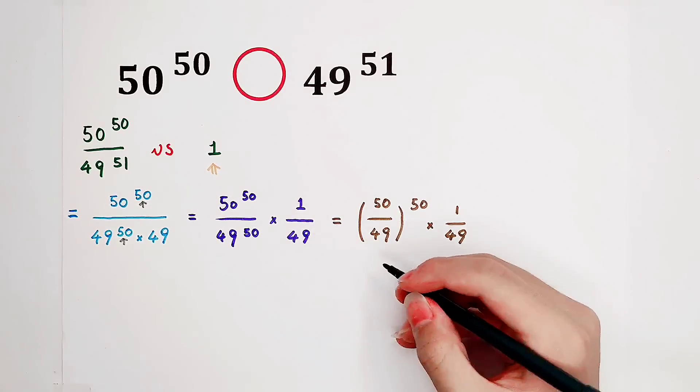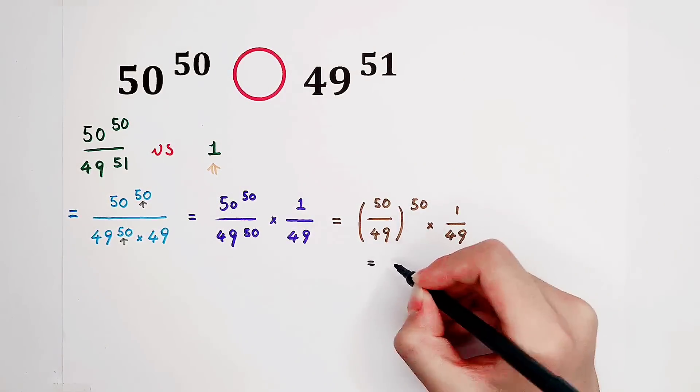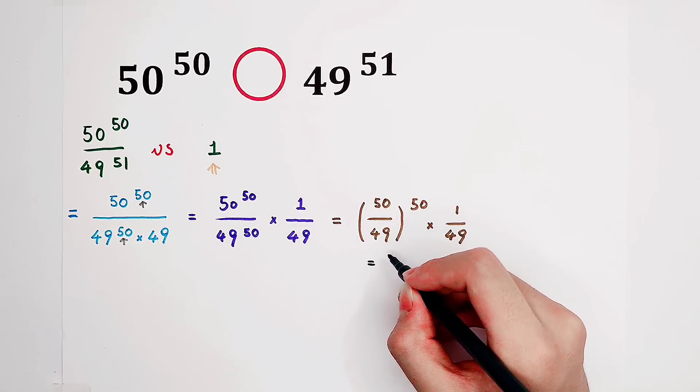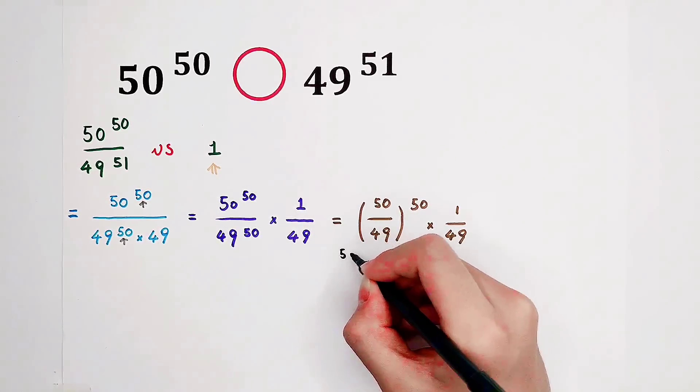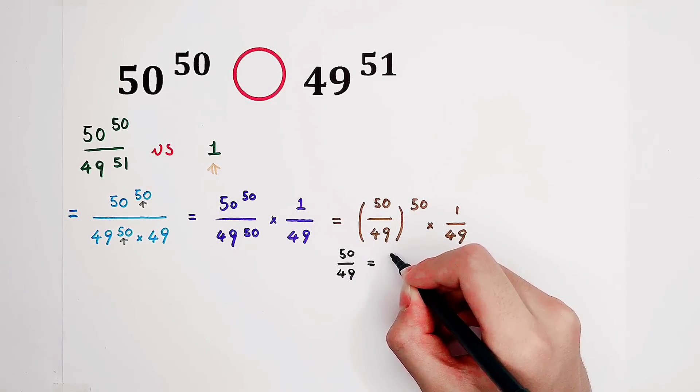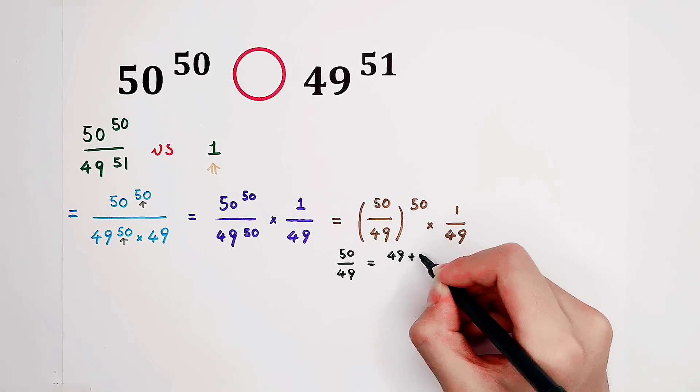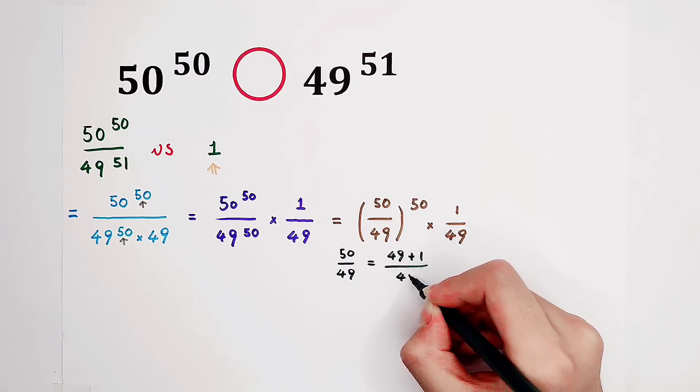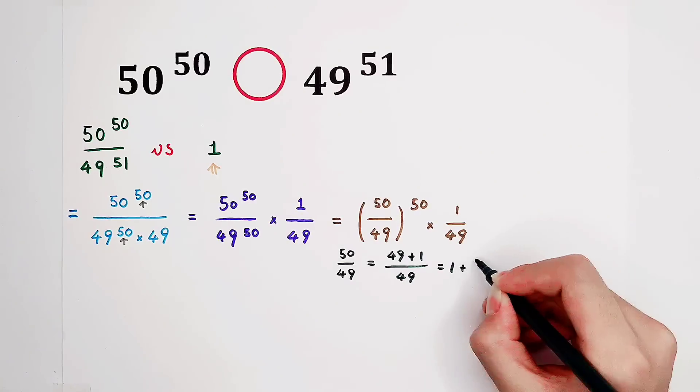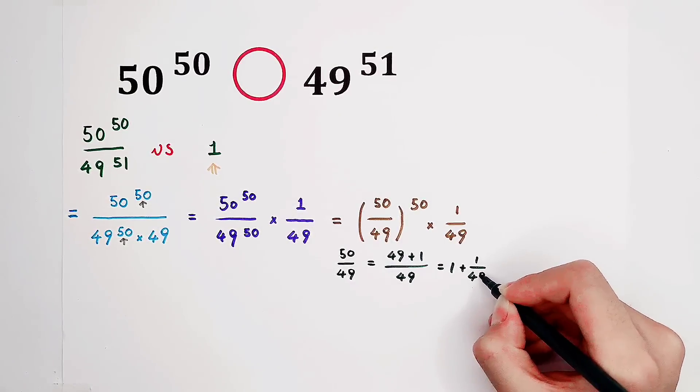So therefore, it is 1 plus 1 over 49, to the power of 50, times 1 over 49.